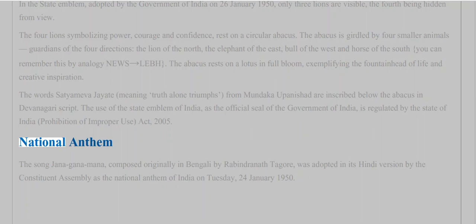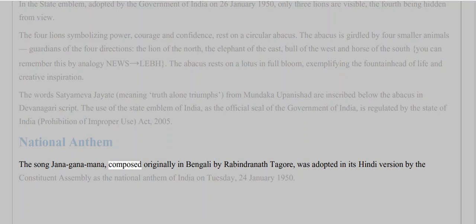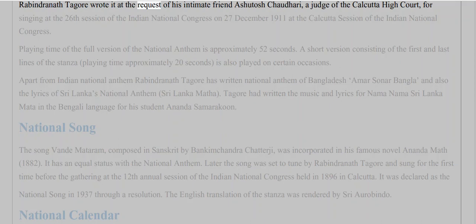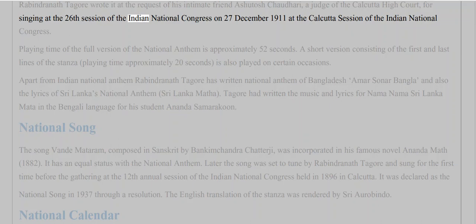National Anthem: The song 'Jana Gana Mana,' composed originally in Bengali by Rabindranath Tagore, was adopted in its Hindi version by the Constituent Assembly as the National Anthem of India on Tuesday, 24th January 1950. Rabindranath Tagore wrote it at the request of his intimate friend Ashutosh Chaudhary, a judge of the Calcutta High Court, for singing at the 26th session of the Indian National Congress on 27th December 1911, at the Calcutta session.